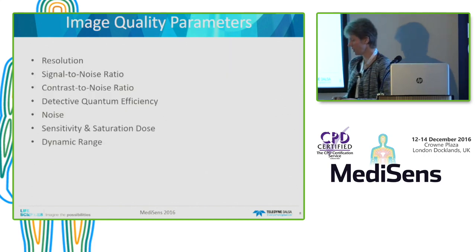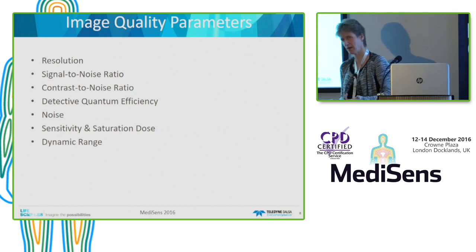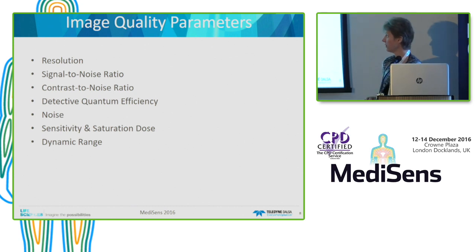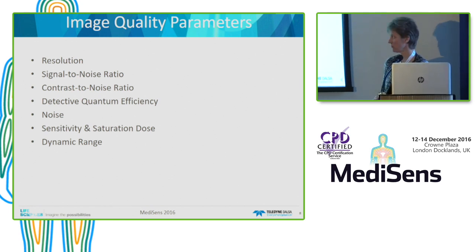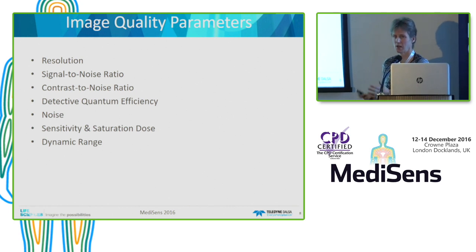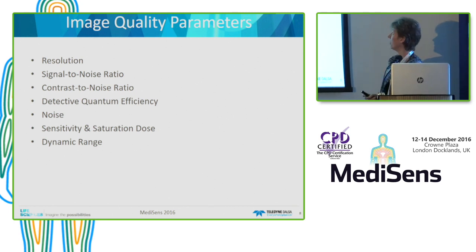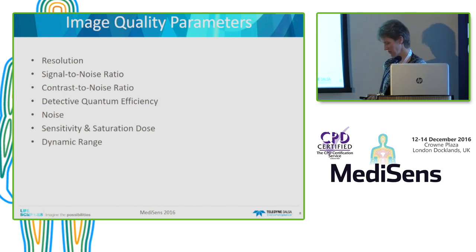So which parameters define image quality? It's the resolution, the signal-to-noise ratio, the contrast-to-noise ratio, DQE noise, sensitivity and saturation, dose, and dynamic range. I want to go through all of these aspects in this presentation. For me, the starting point is the x-ray detector — I'm focusing on what happens at the detector, not the total system, though the tube and system configuration also play a role in what you finally see in the x-ray image.